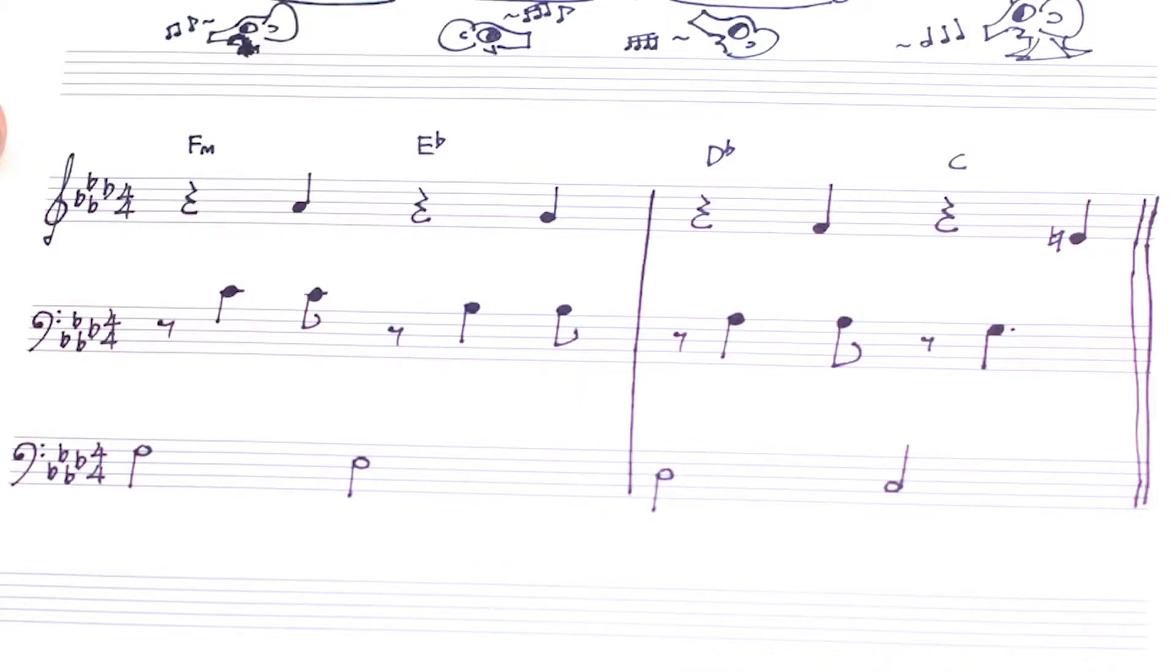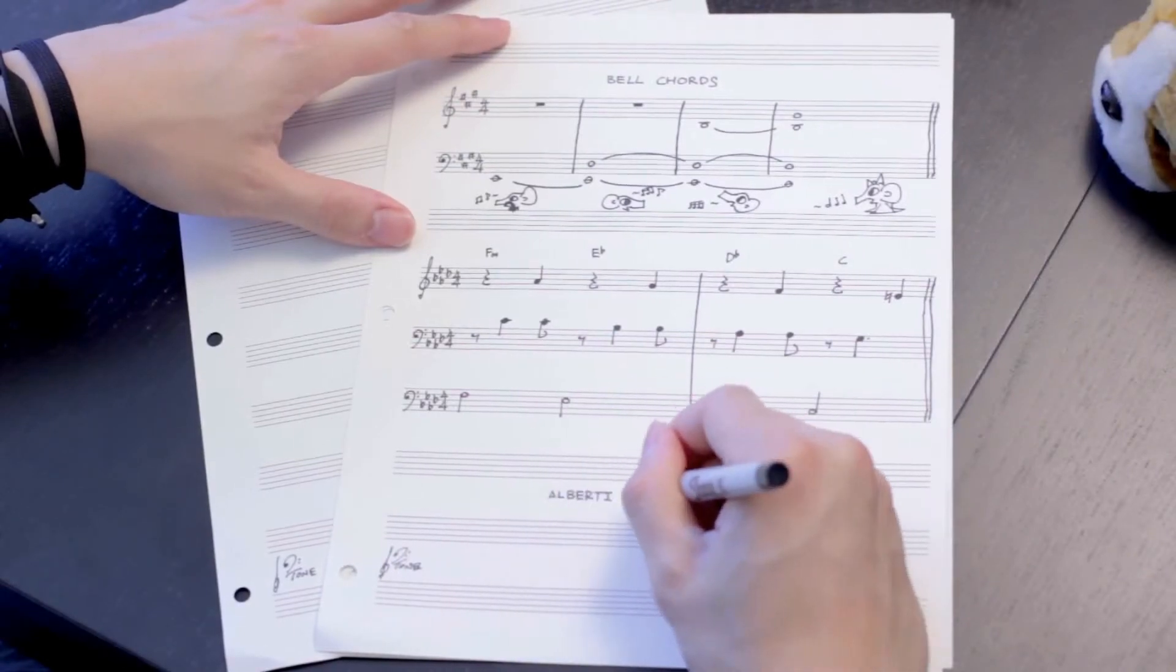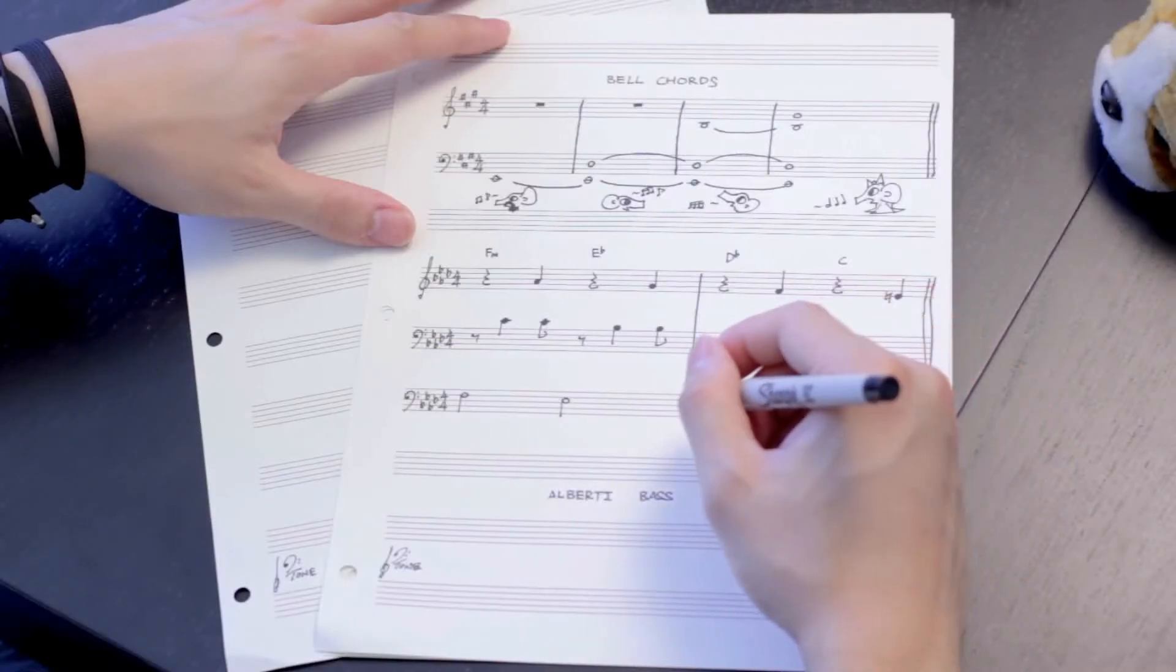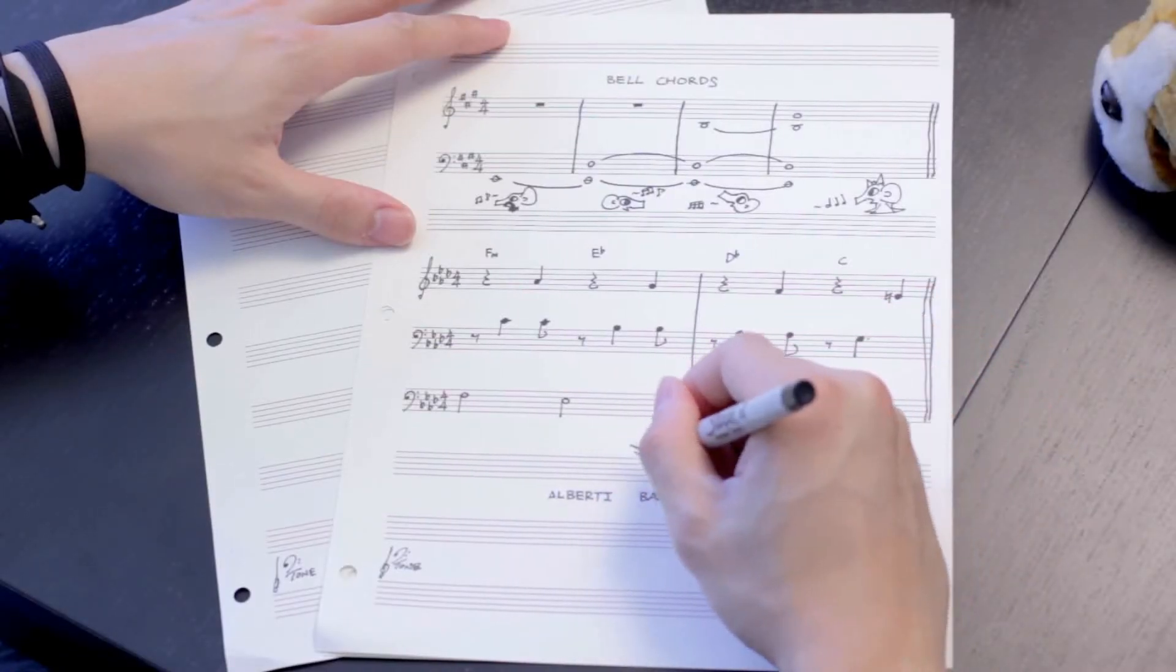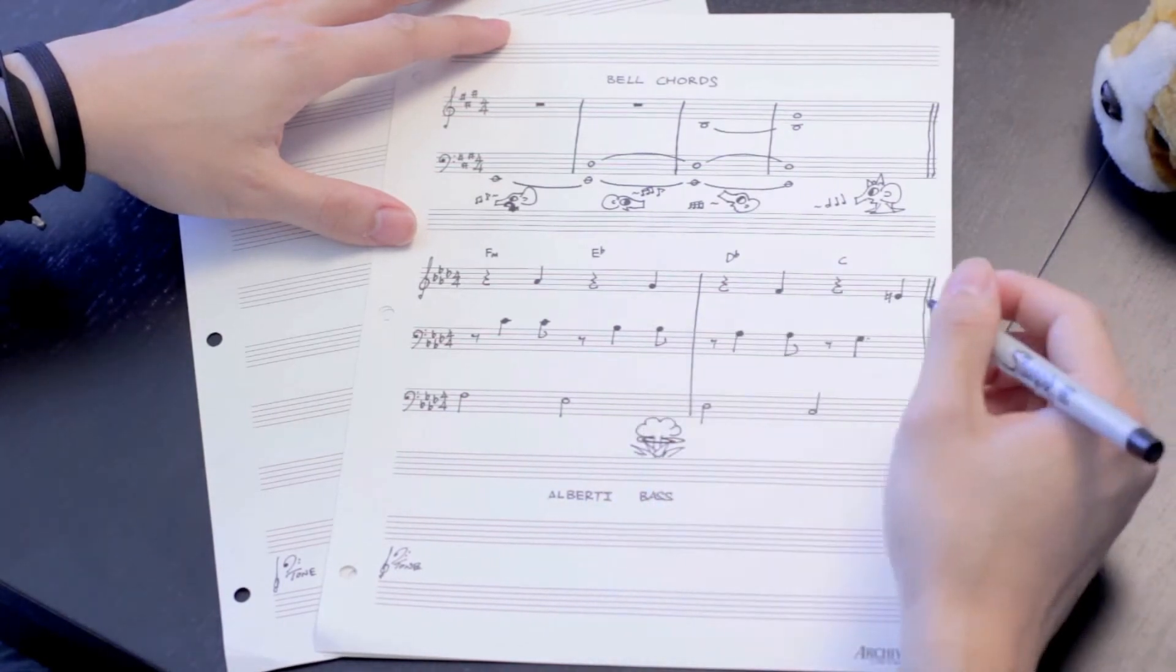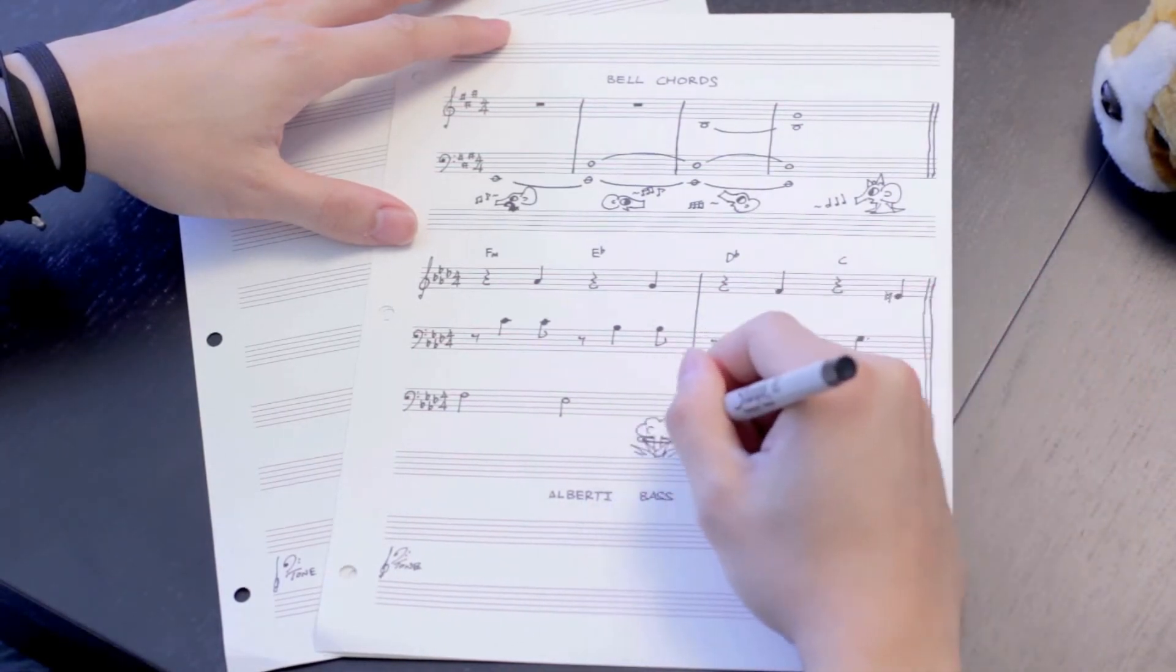Going back to classical music, one very common arpeggiation pattern is known as the Alberti bass. As the name implies, this is usually heard in the lowest voice. The Alberti bass is a specific four-note pattern where you take a three-note chord voicing, then play the lowest note, the highest note, the middle note, and then the highest note again.